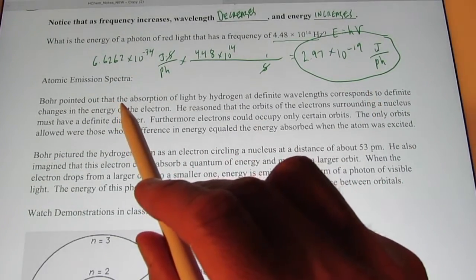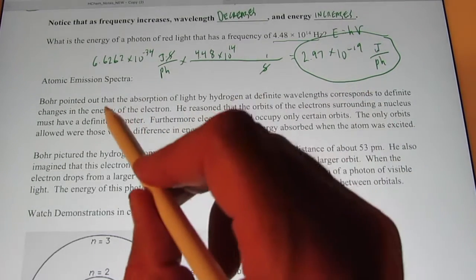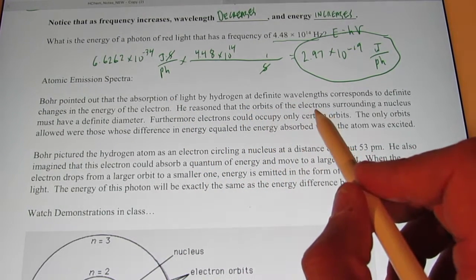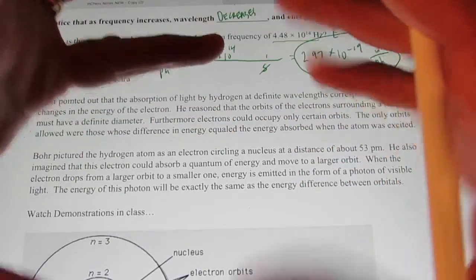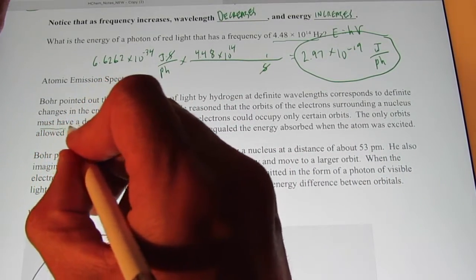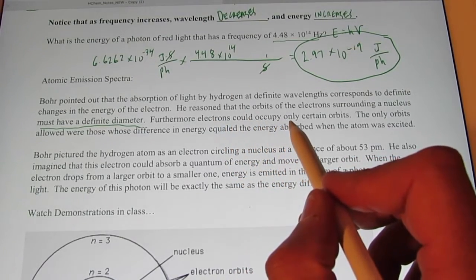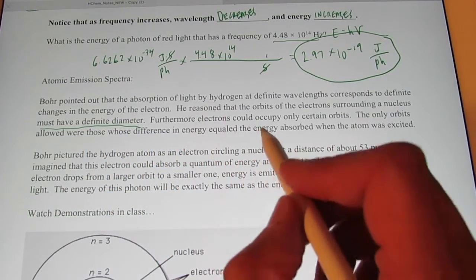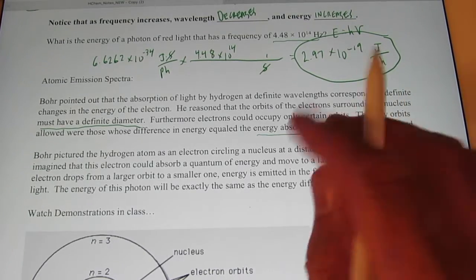Alright. Now, Bohr pointed out that the absorption of light by hydrogen at definite wavelength corresponds to definite changes in energy of the electron. He reasoned that the orbits of the electron surrounding the nucleus. Remember, Rutherford found out that the electron surrounded the nucleus. But Bohr found that they must have a definite diameter. Furthermore, electrons can only occupy certain orbits. The only orbits allowed were those whose difference in energy equaled the energy absorbed when an atom was excited.